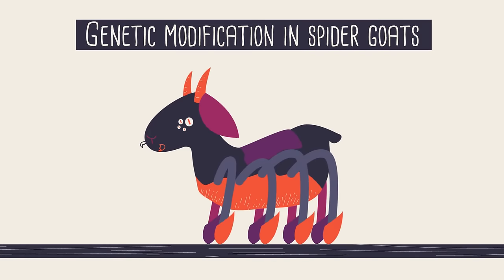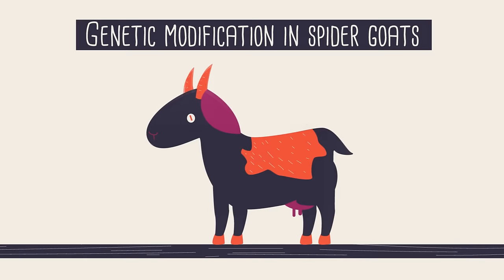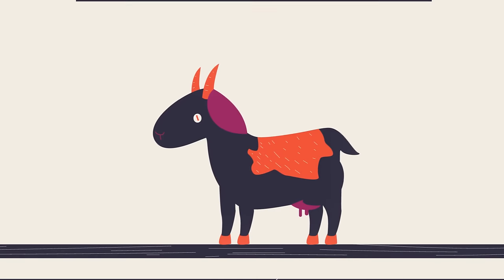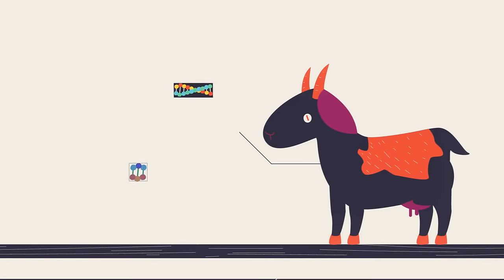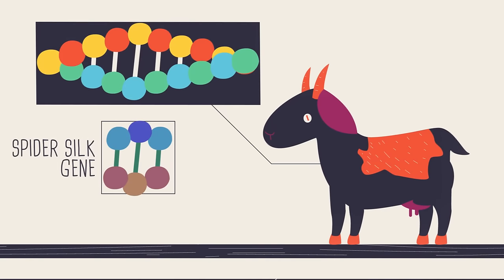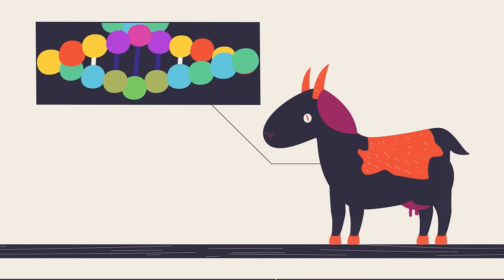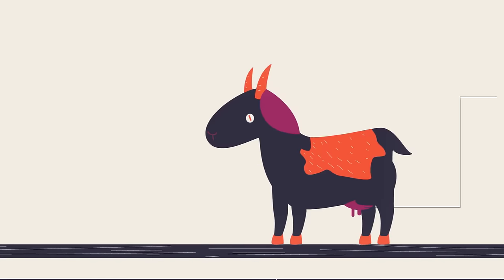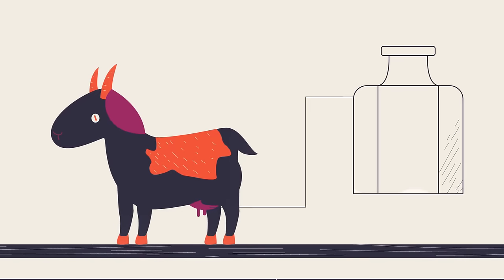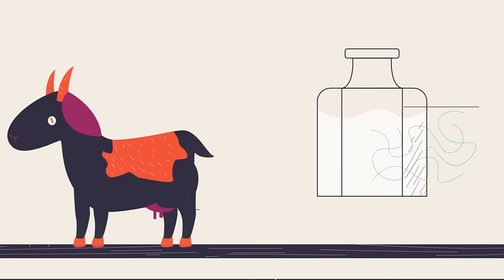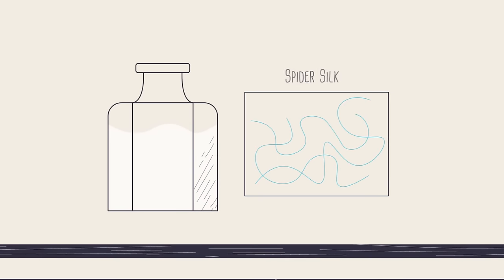Spider goats are also a great example of a genetically modified organism. They aren't as scary as they sound — they're goats that have had the spider silk gene inserted into their DNA, so when female goats lactate and produce milk, the milk contains spider silk.